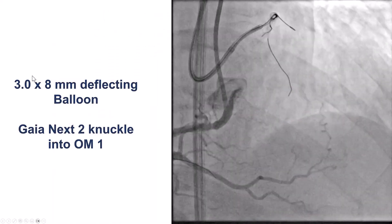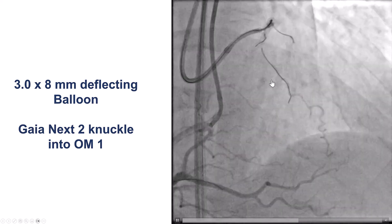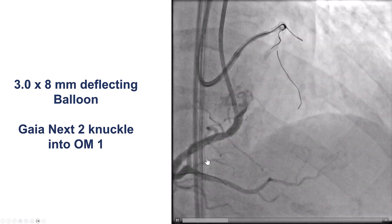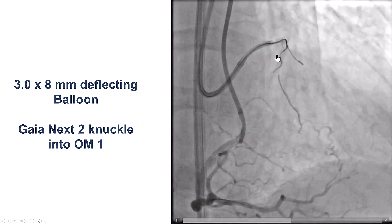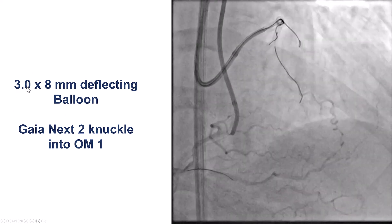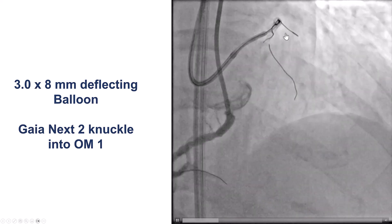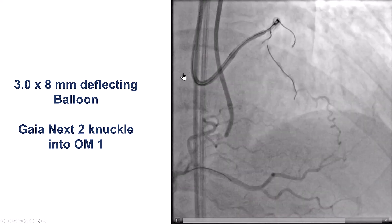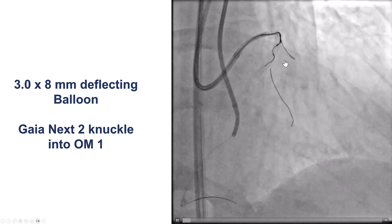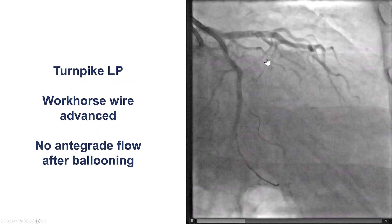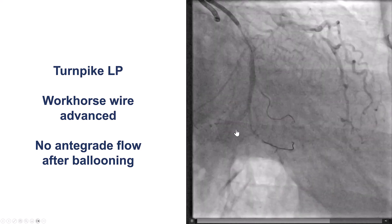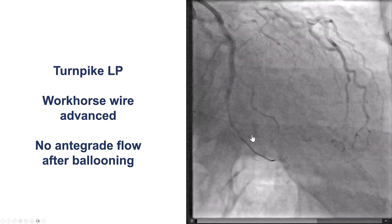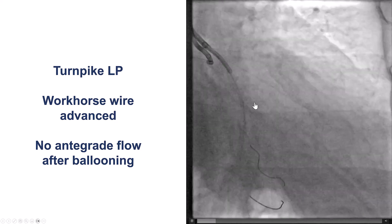We decided to use a small balloon past the presumed origin of the obtuse marginal branch. We inflated a 3 by 8 millimeter balloon just distal to where we thought was the origin of the obtuse marginal, and then tried with the Gaia Next, which actually knuckled and prolapsed into what seemed to be the first obtuse marginal branch. So now we had a wire in the second and in the first obtuse marginal branch, but even with balloon inflation, we didn't have real antegrade flow in that obtuse marginal branch.